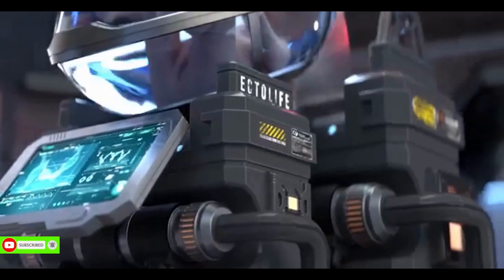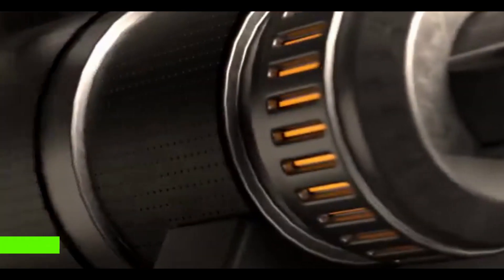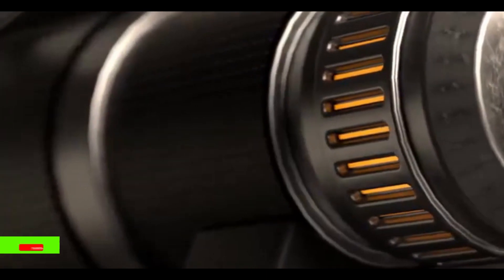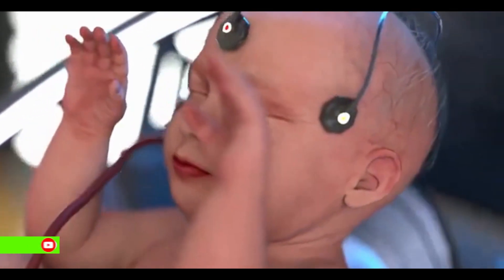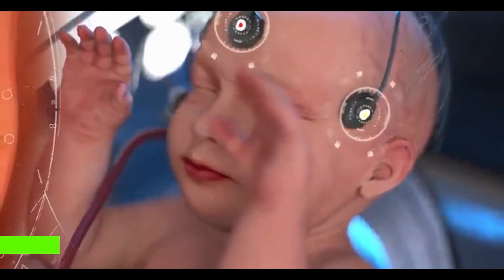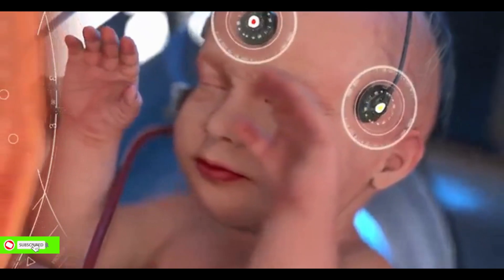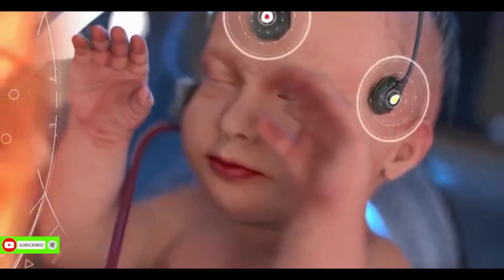Ectolife allows your baby to develop in an infection-free environment. The pods are made of materials that prevent germs from sticking to their surfaces. Every growth pod features sensors that can monitor your baby's vital signs, including heartbeat, temperature, blood pressure, breathing rate and oxygen saturation.